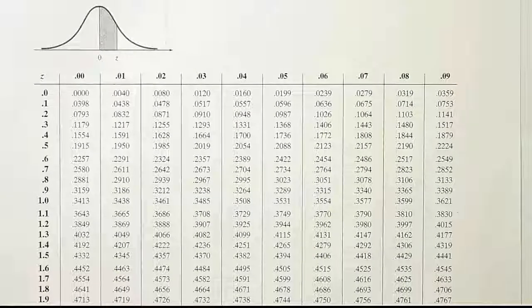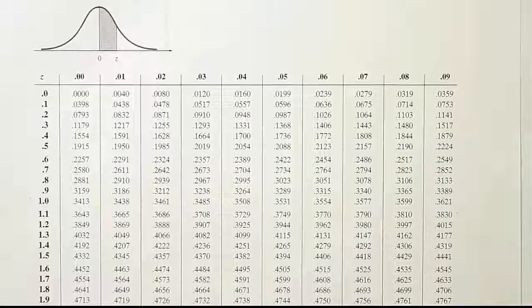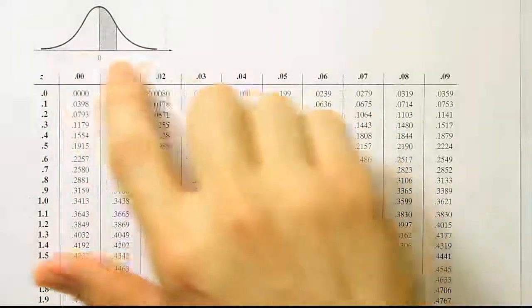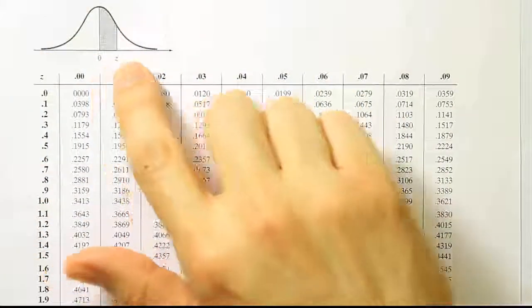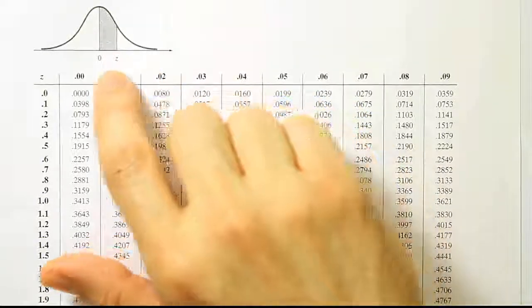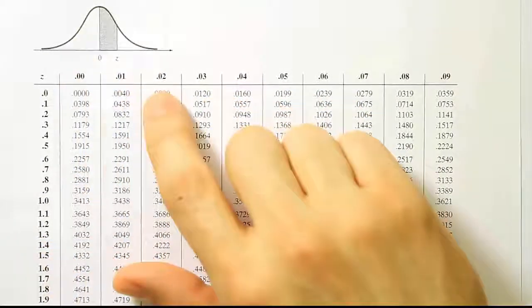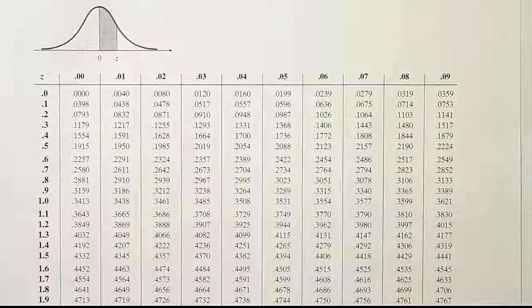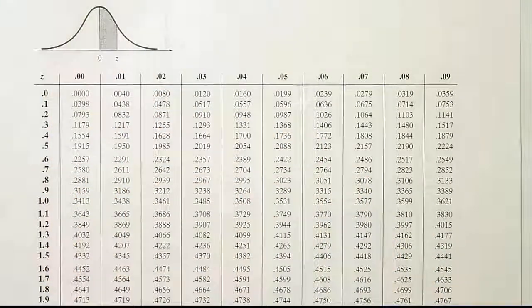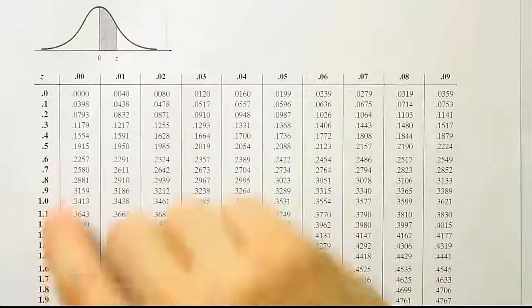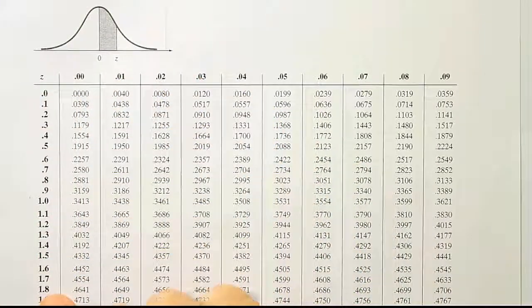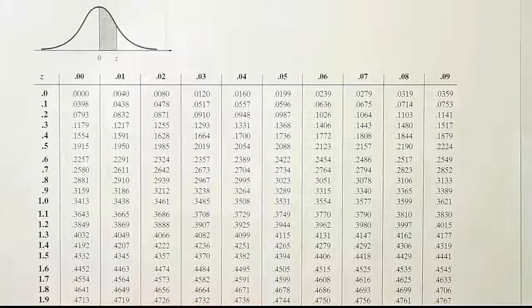So in this problem we have to look up negative 1.99. Notice the table doesn't have any negative values but it is symmetric because it's a bell curve. So that means if we looked up 1.99 it would be the same as looking up negative 1.99. So let's just go ahead and look up the 1.99 and that will be the same thing. We don't need to worry about the difference between negative and positive numbers in terms of probability. We'll get the same probability regardless of whether the z score is 1.99 or negative 1.99.